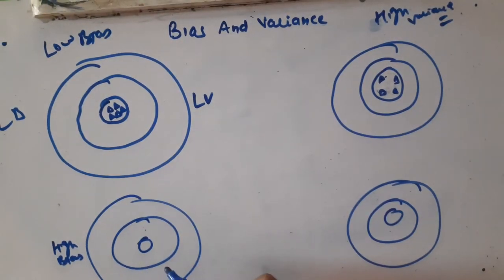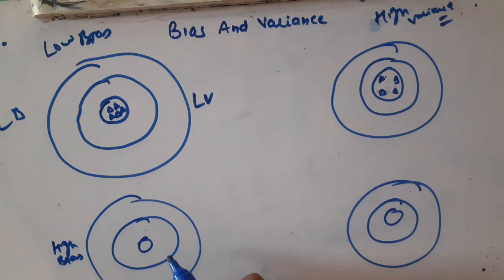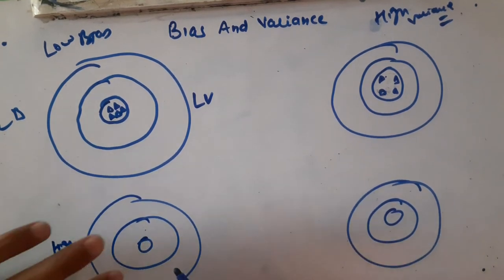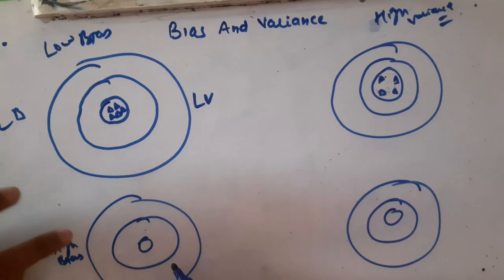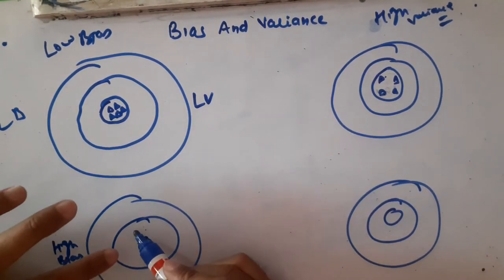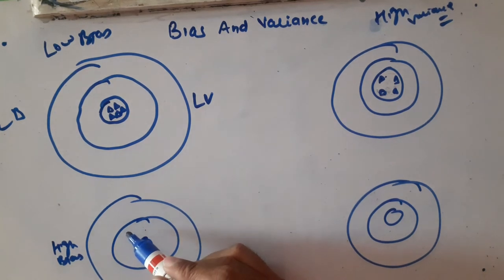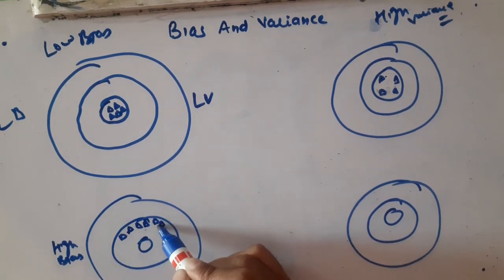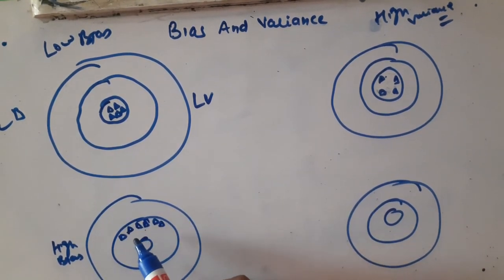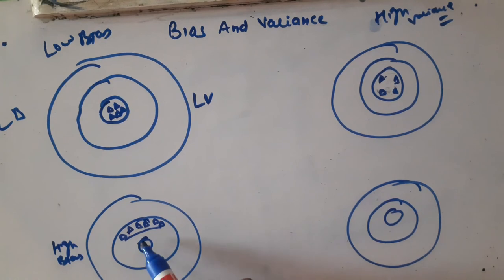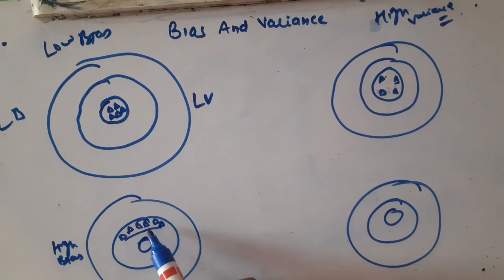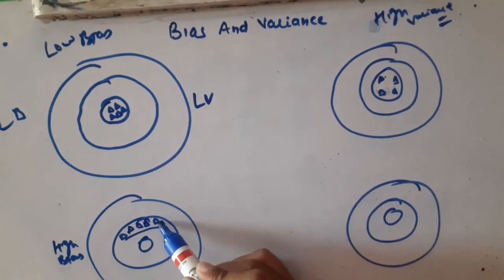The third case is high bias and low variance. High bias means the points are away from the truth — far from the center of the bullseye. But they are clustered together, not scattered, so they have low variance. Think of it as: the truth is at the center, and all the points are grouped together but away from that center.